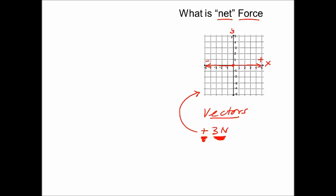If we're talking about the y-axis, then a positively acting force would be one that acts upward, and a negative force would be one that acts downward. So along the horizontal x-axis, a force can be negative acting left, or positive acting to the right. Along the vertical plane, a force can be negative acting downward, or positive acting upward. So positive 3 newtons would be a 3-newton force pushing or pulling to the right, and negative 3 newtons would be a 3-newton force pushing or pulling to the left.